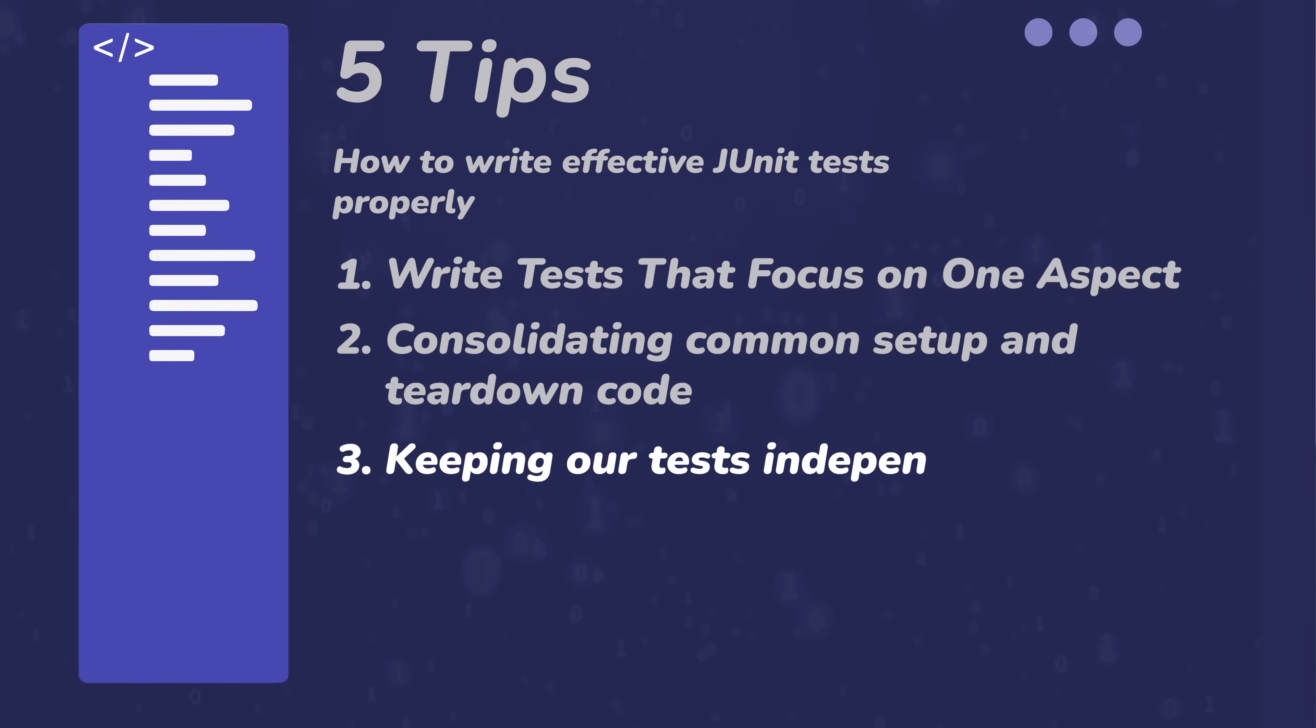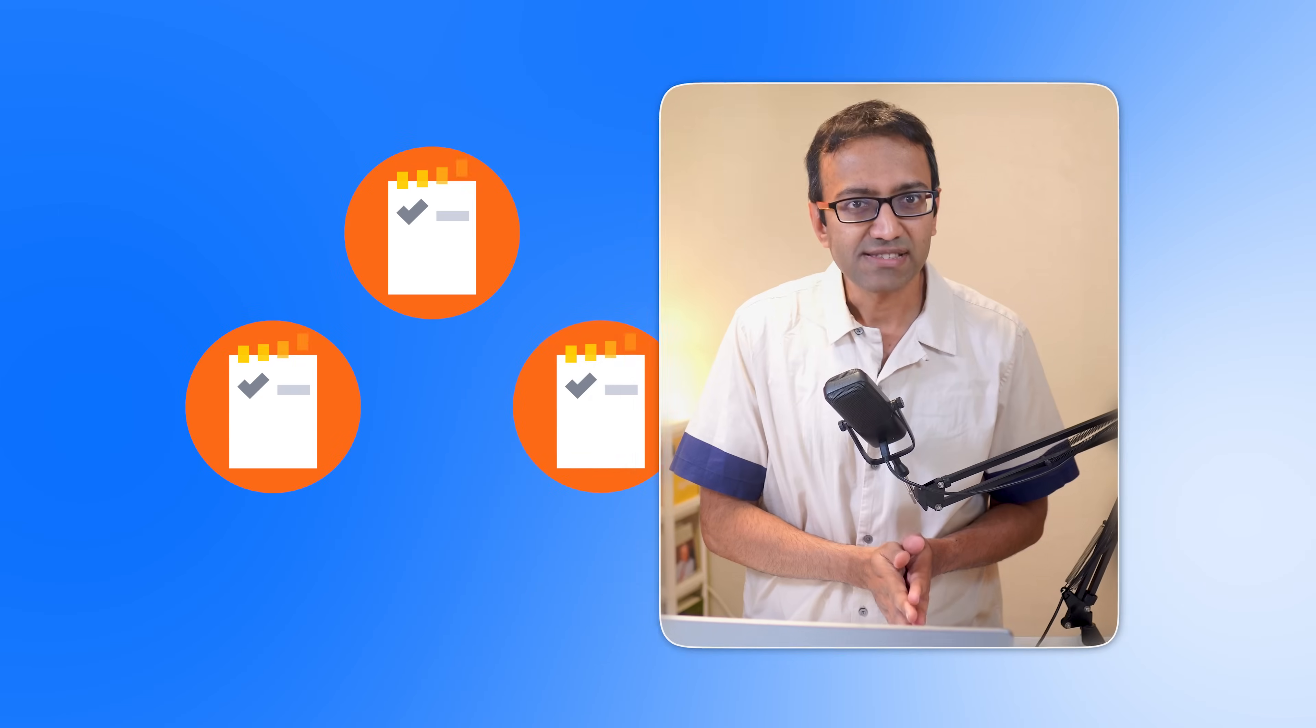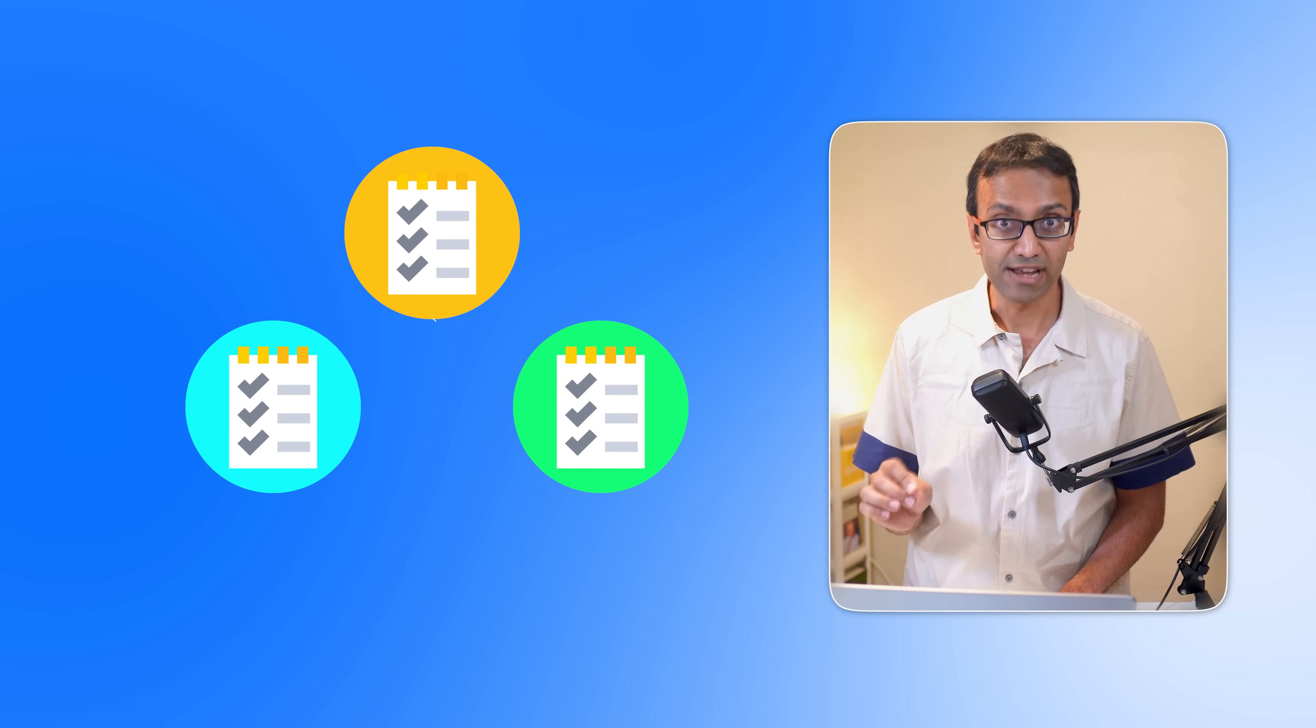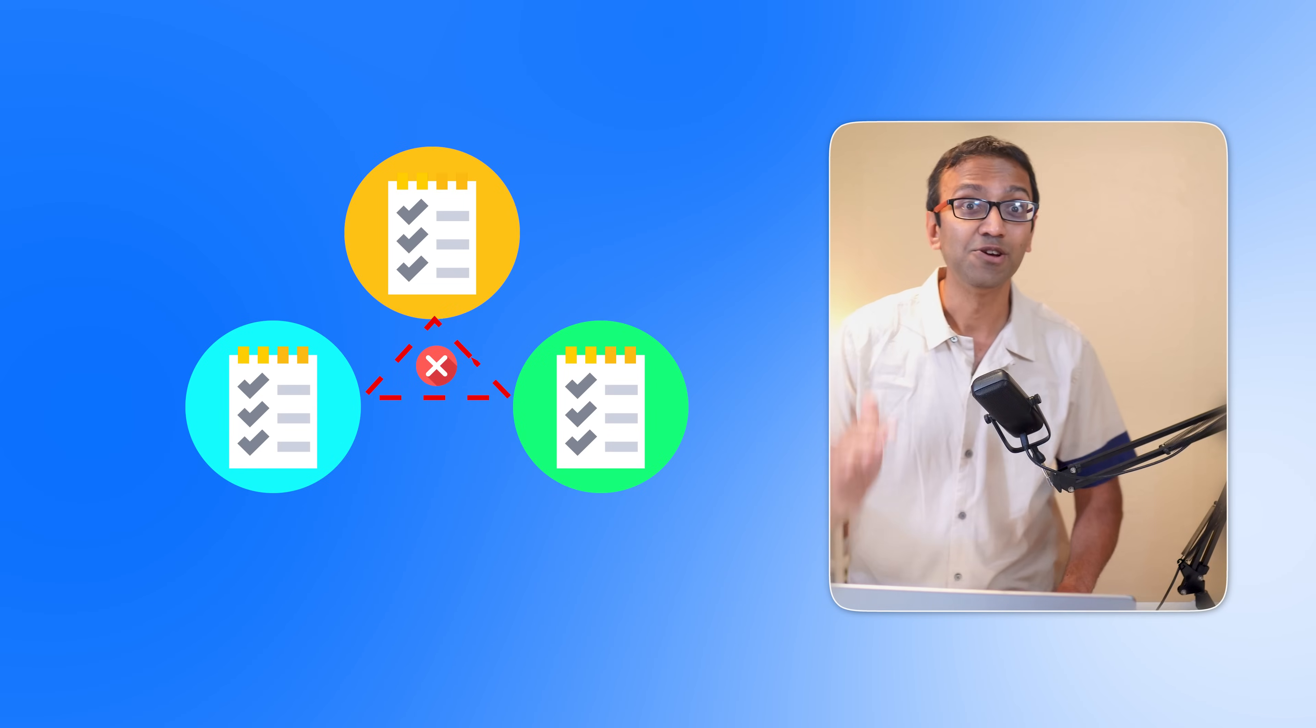Moving on to tip number three: keeping our tests independent and repeatable. Think of each test as a standalone story. It shouldn't rely on the plot of another story to make sense. Standalone story, no sequel, no part of a series. Tests need to be able to run without expecting another test to run. We can expect the setup and the teardown we've just discussed, but it should not depend on another test itself having run. When the tests depend on each other, it's like building a house of cards. If you remove one, the whole structure might collapse. Each test should stand on its own, unaffected by others.